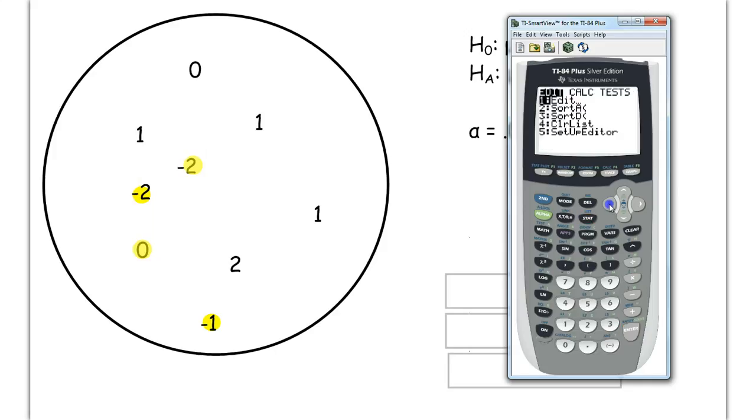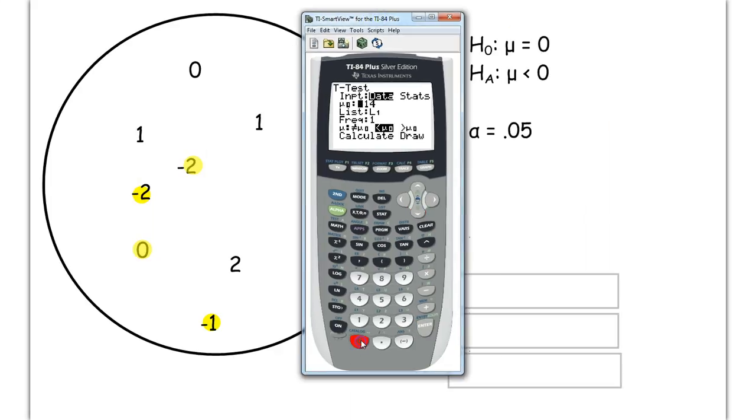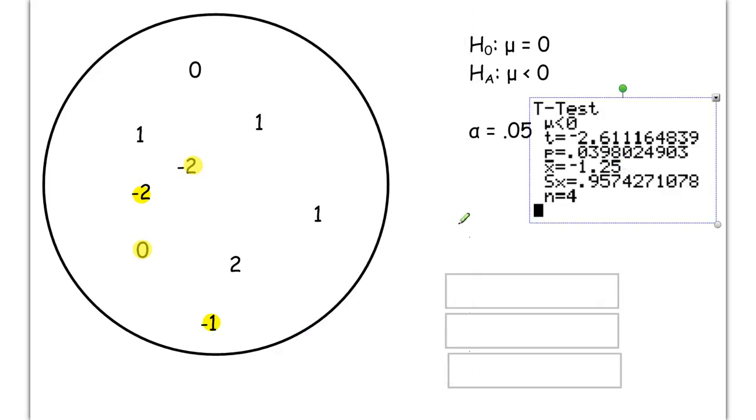I'm going to go to stat, test, t-test. We're going to run a t-test. And I'm going to switch it to data mode because I have my list 1 data. My null hypothesis here is going to be mu is equal to 0. Most of this other information can stay the same. For my alternative, I'm going to be pointing to the left because it's less than. And when I calculate, I'm going to get these results here.